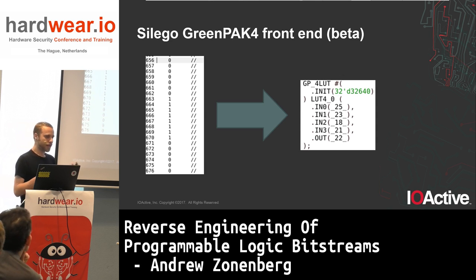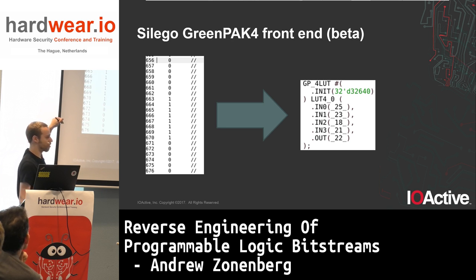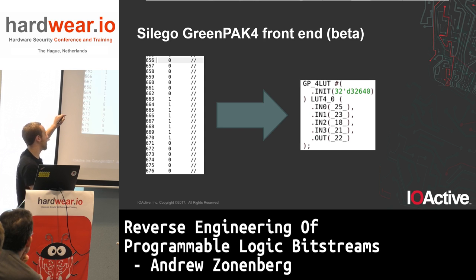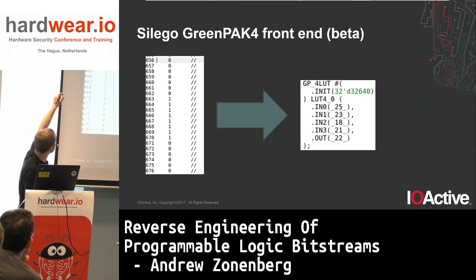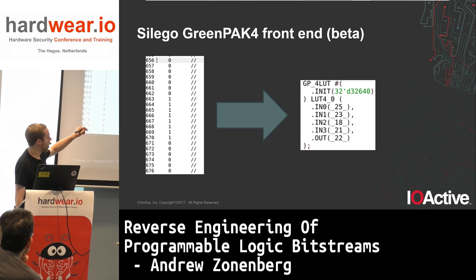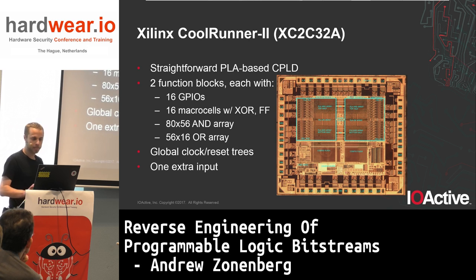The GreenPak front end takes in a sequence of ones and zeros — the bitstream format is extremely verbose, with indexes, ASCII ones and zeros, and comments per line. This just happens to be the configuration for a LUT. If you do the math, you can see the LUT equation right there. The routing matrix is shown separately; this is just the LUT equation storage. We've got the initialization value, and then the net numbers for the inputs and outputs.